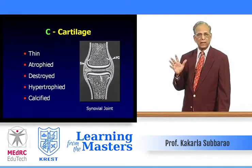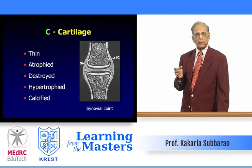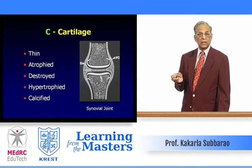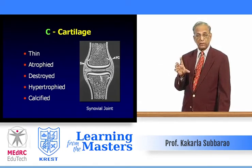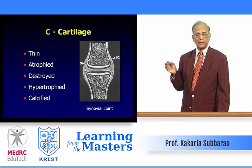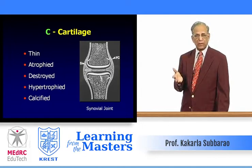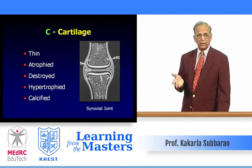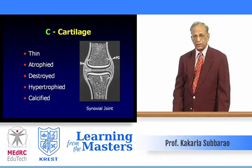Now we come to cartilage — C in the ABCDES framework. Cartilage may be thinned due to inflammation or degeneration, atrophied completely, or destroyed completely by infection. It may be hypertrophied — for example in acromegaly all cartilages are hypertrophied, so the joint space appears widened. Cartilage may also be calcified in metabolic disorders including hyperparathyroidism, alkaptonuria, and calcium pyrophosphate deposition disease.